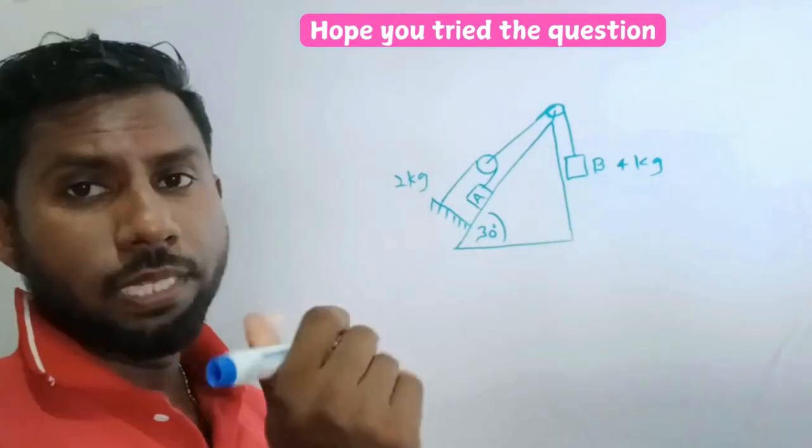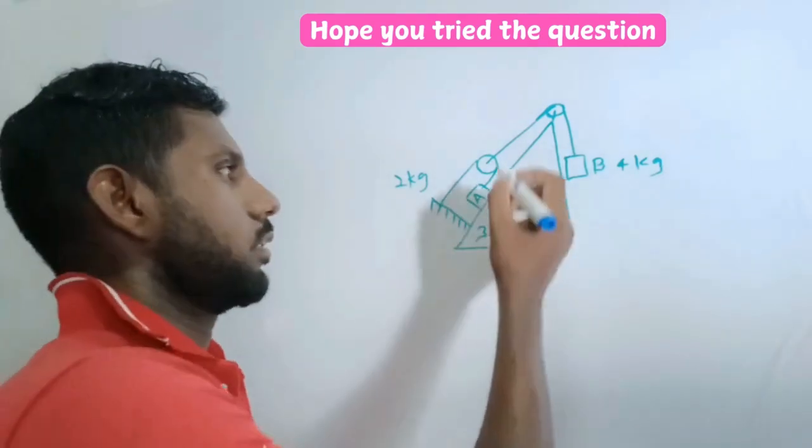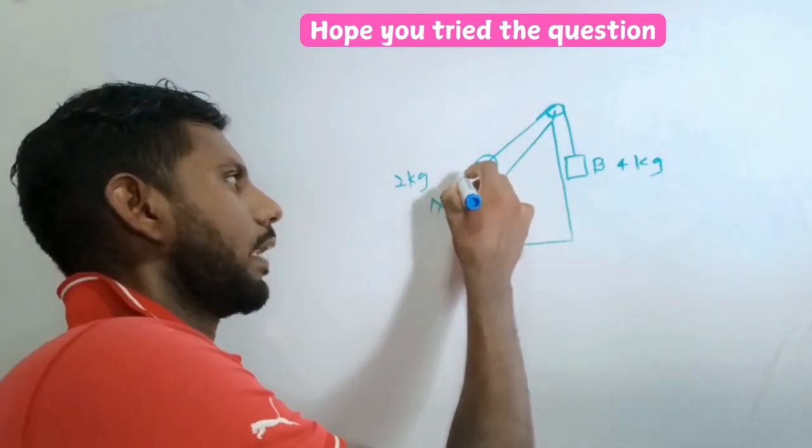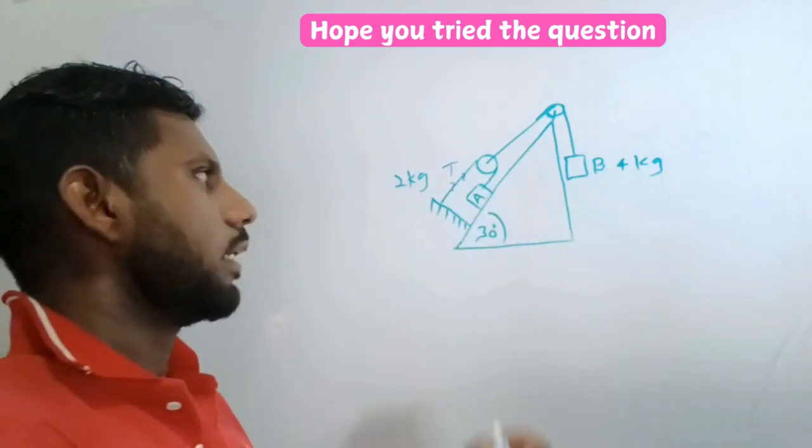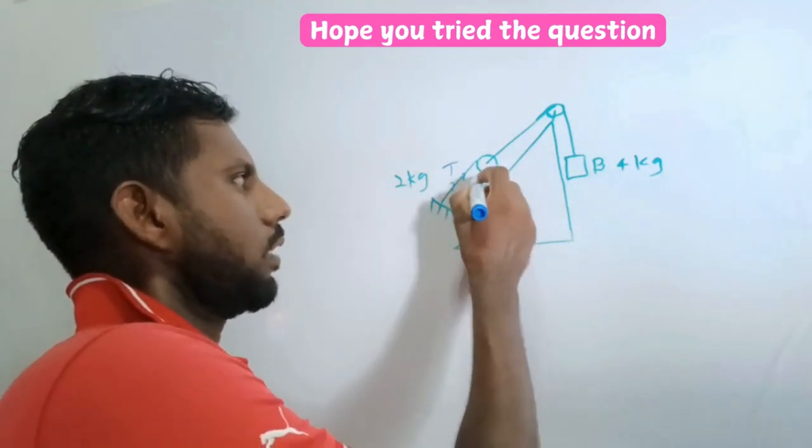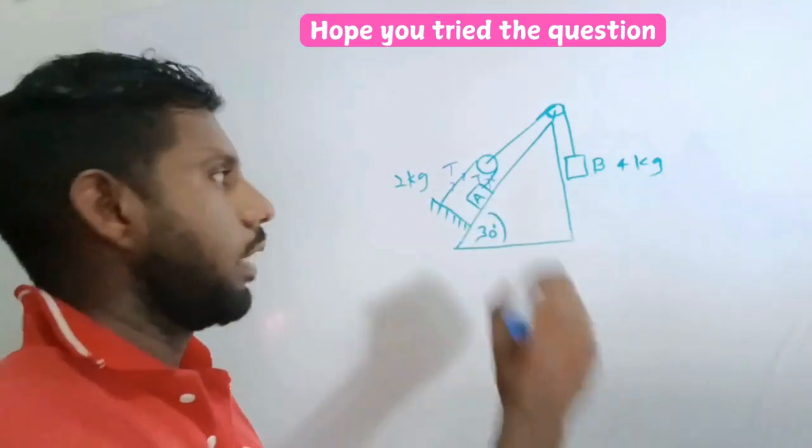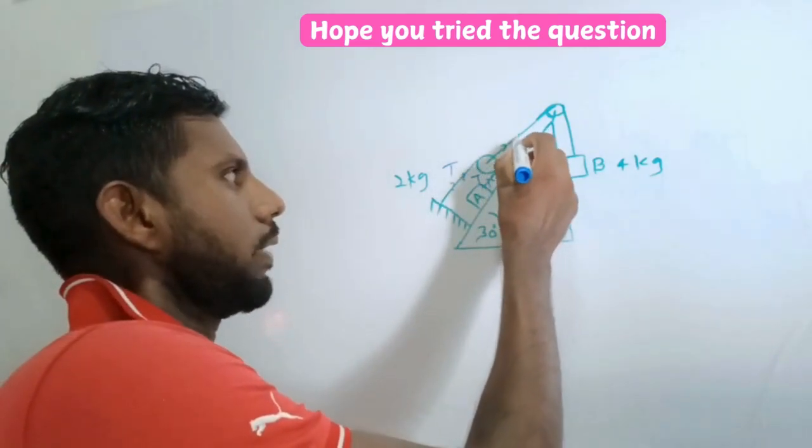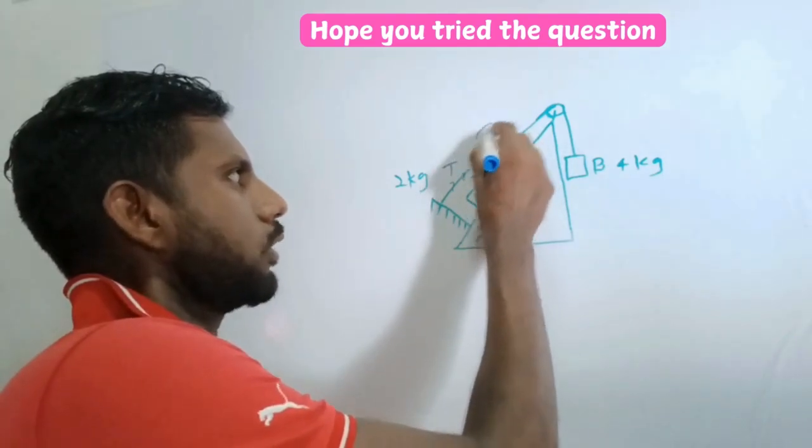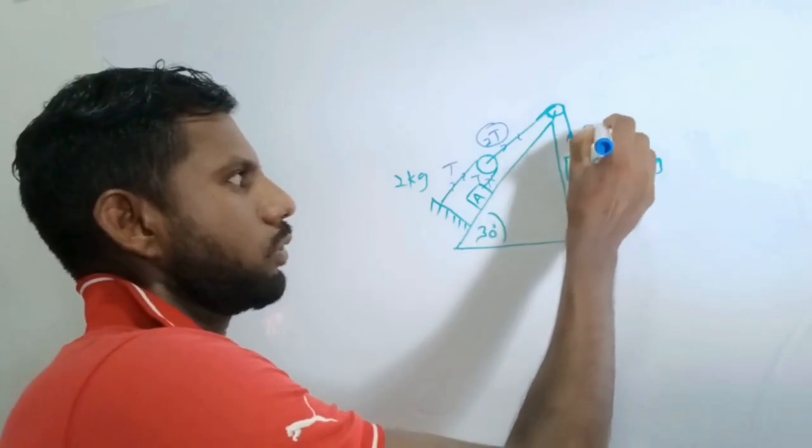Let's write down the tensions first. The tension here, let's say tension T. The tension here becomes T as well. The total tension becomes 2T, double the tension of these two values. So tension here becomes 2T. Now we have written down all the tensions.